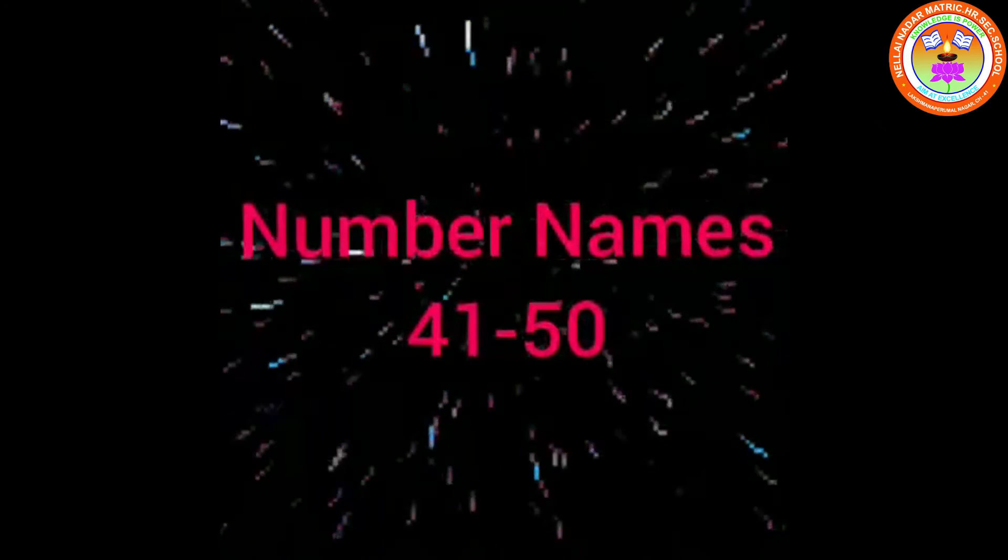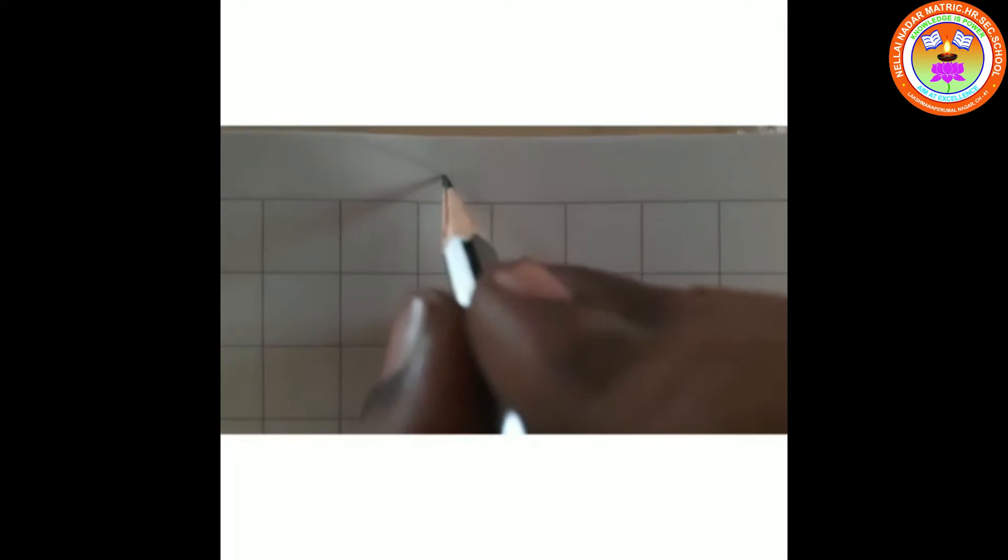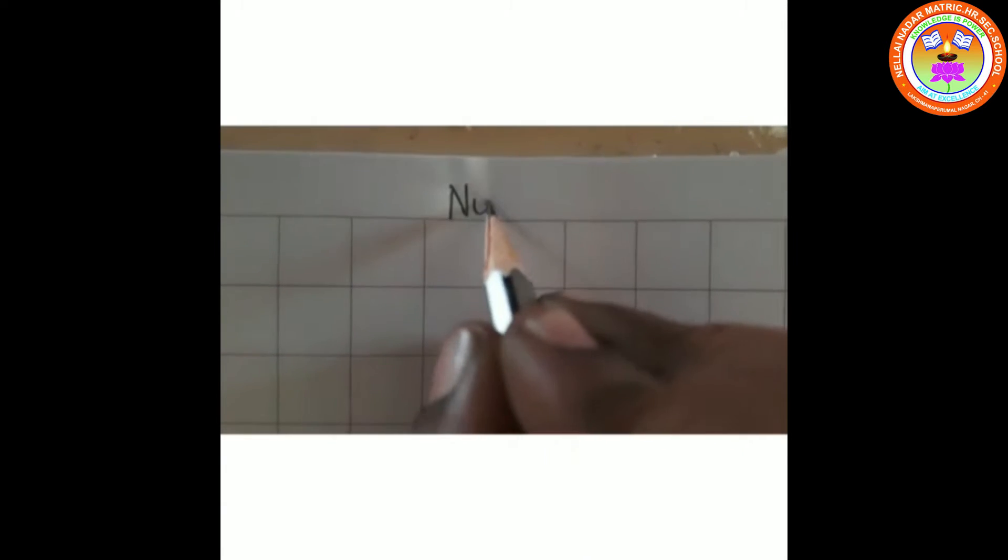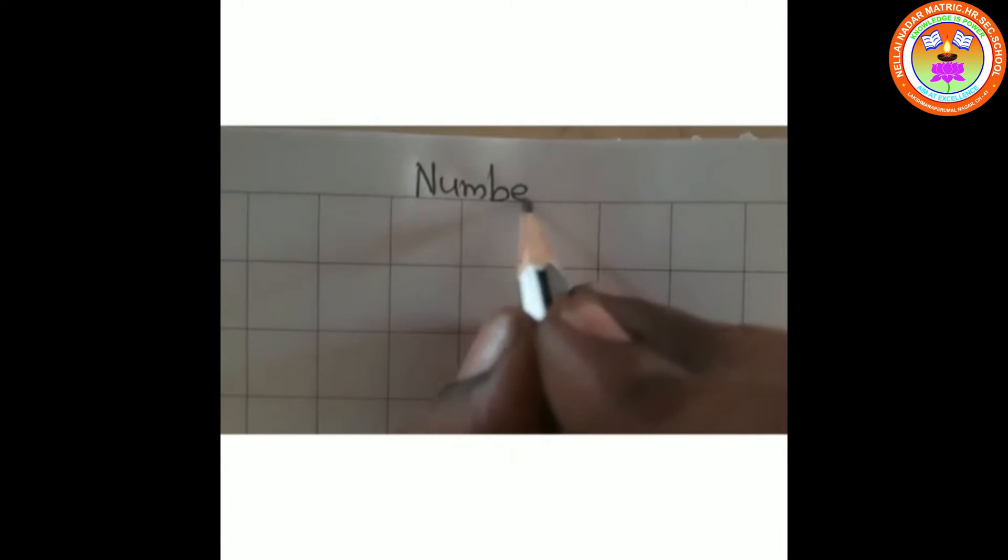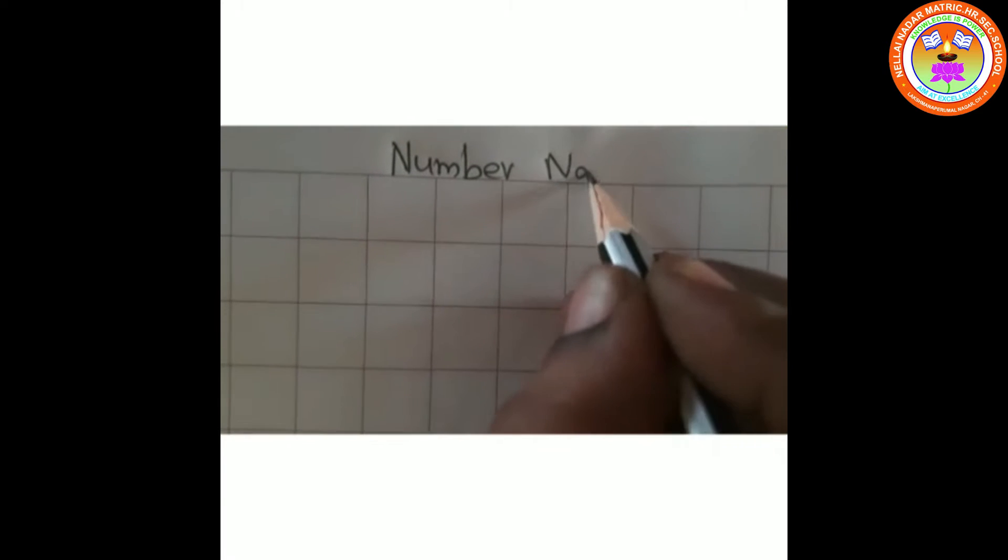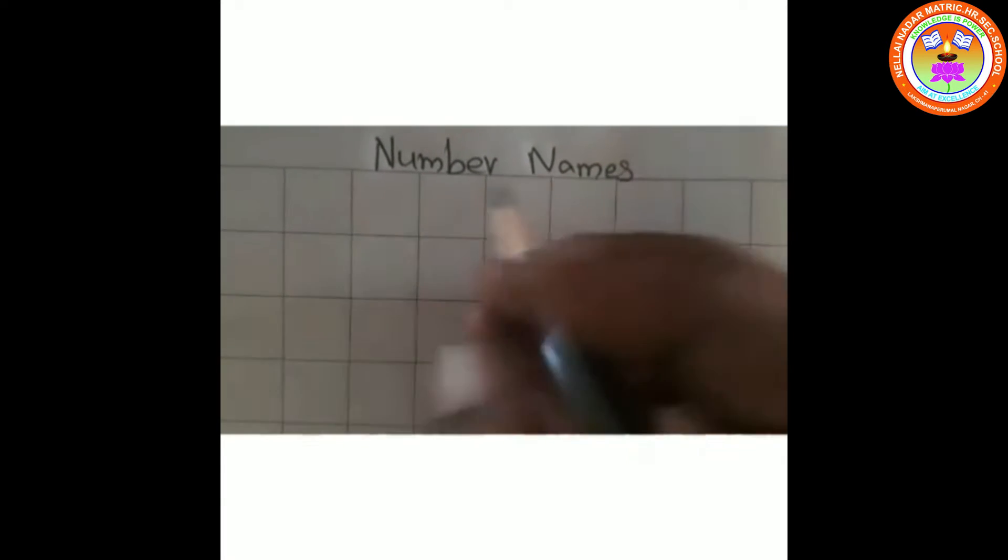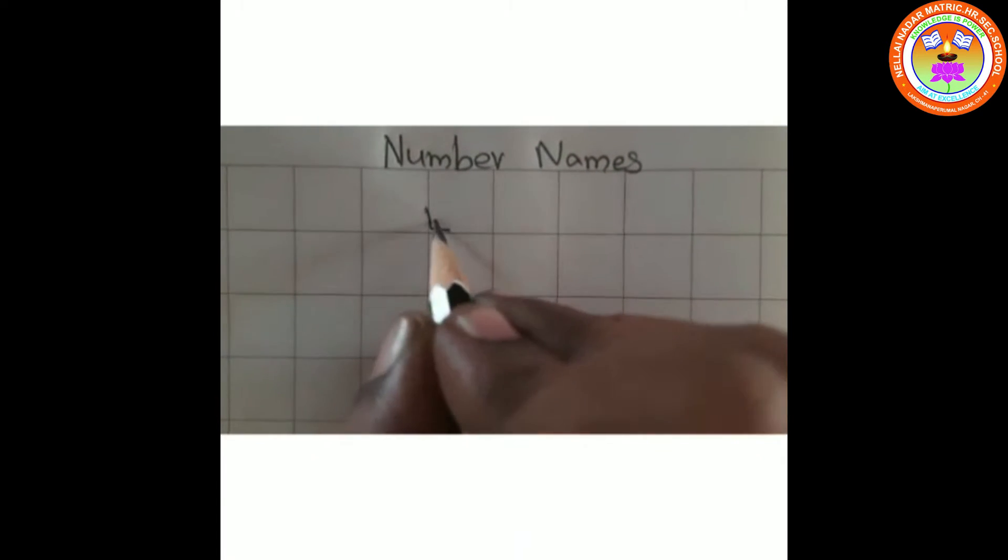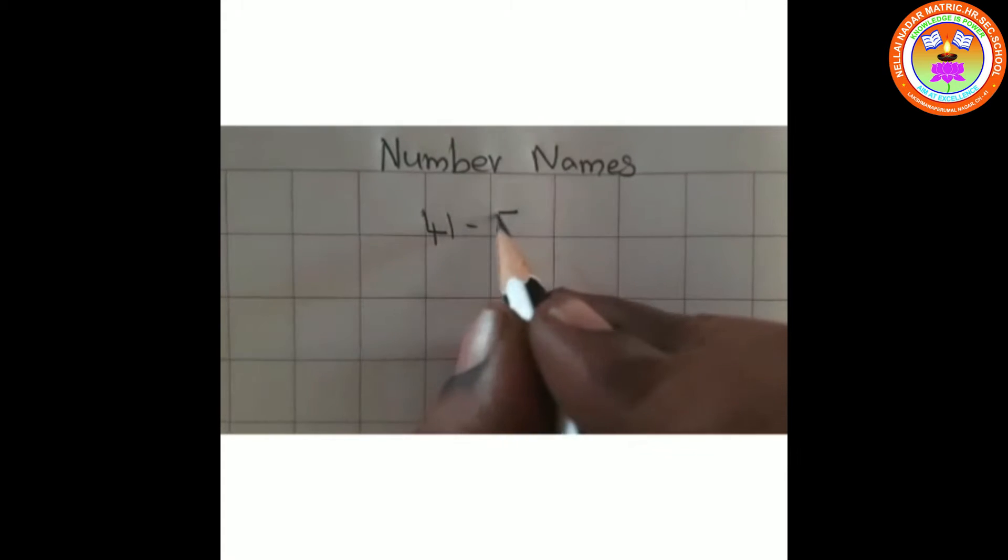All are ready? Shall I start now? We are going to write number names 41 to 50.